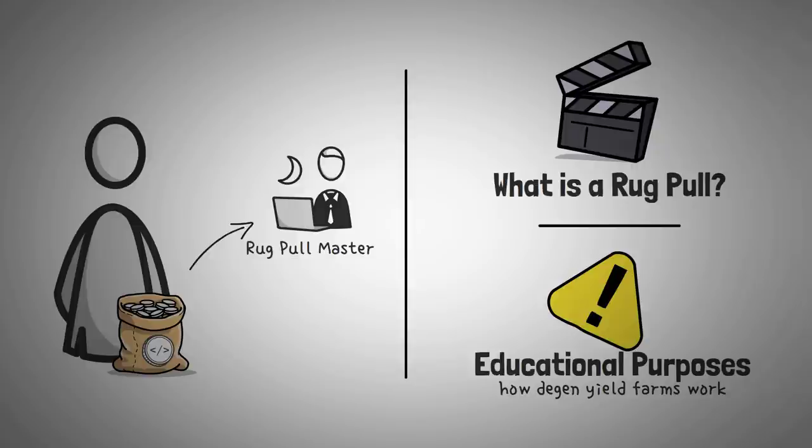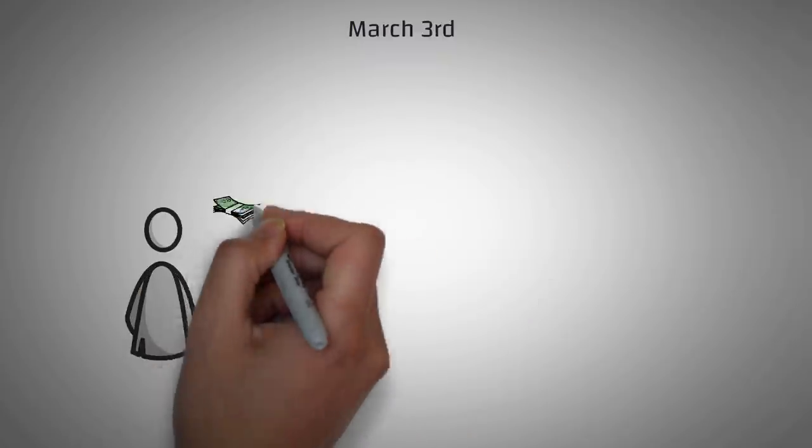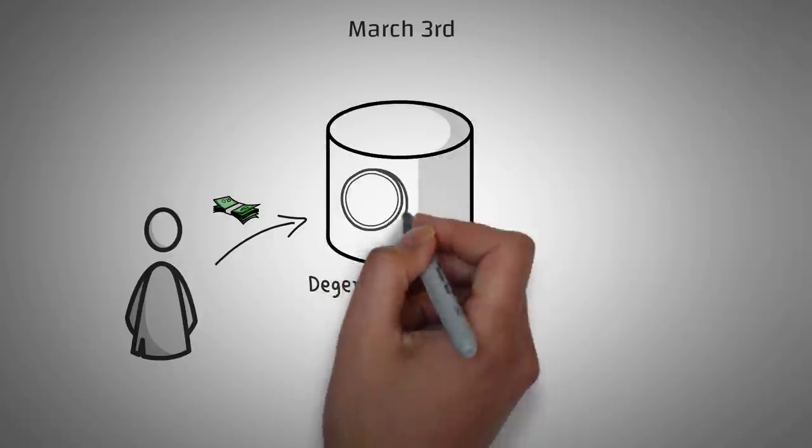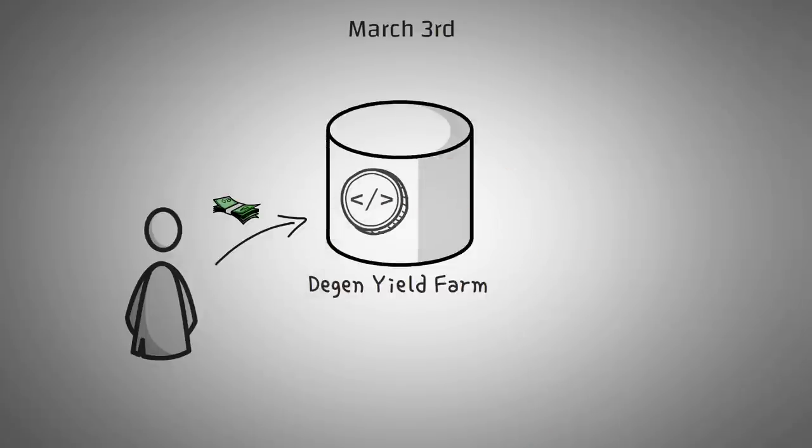By the way, if you don't know what a degen yield farm is, go check out our video on it. The day was March 3rd, and I had just tossed a few hundred dollars into a degen yield farm to see if it was going to pump and dump, and I was kind of curious if the 42,000% APR was actually real.